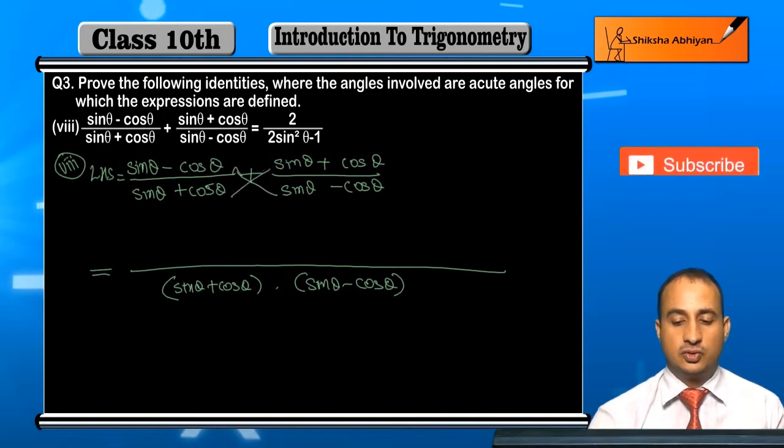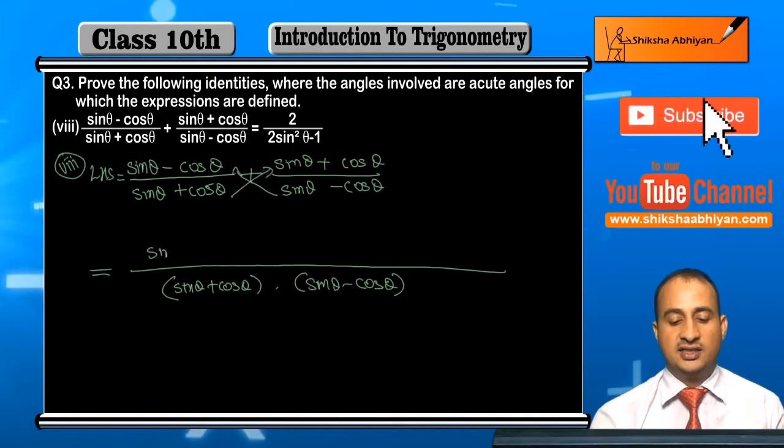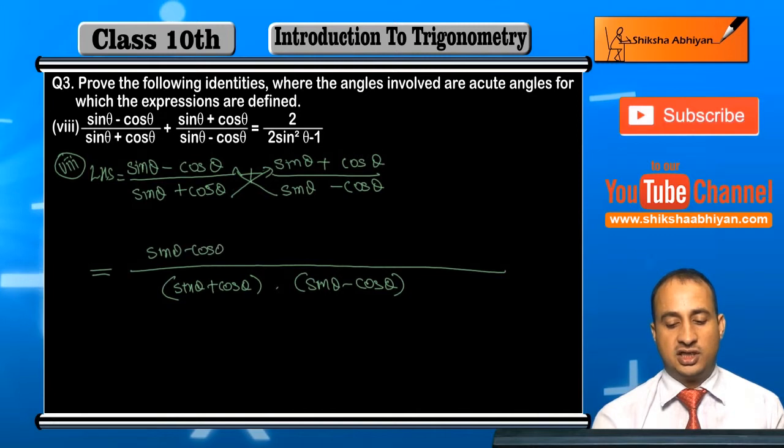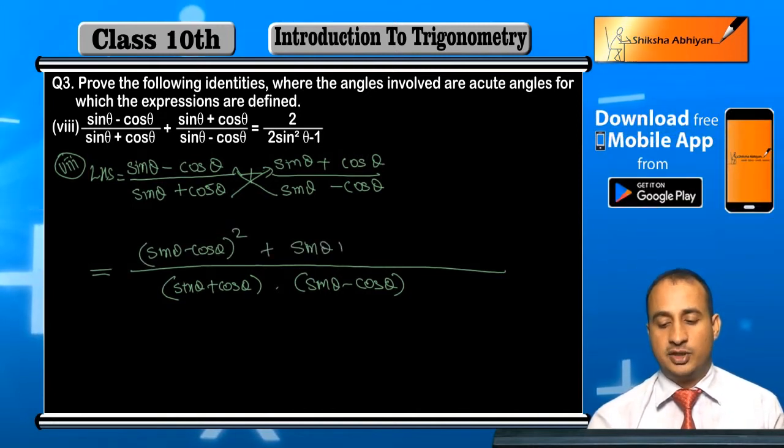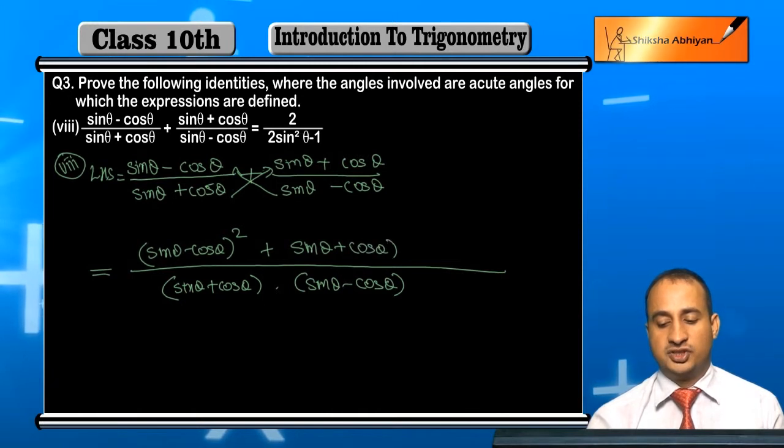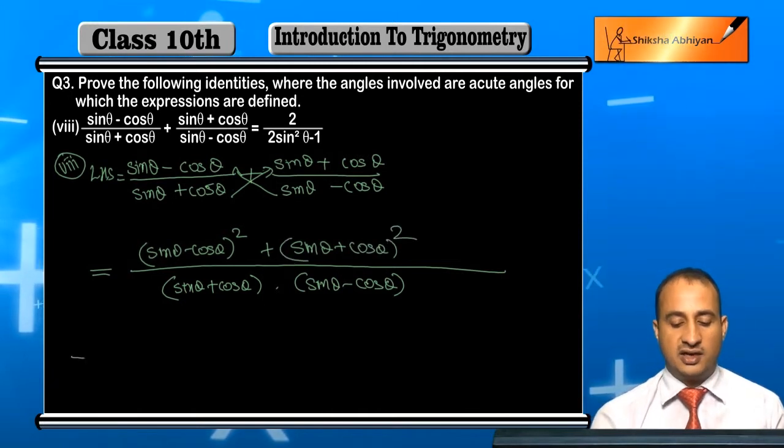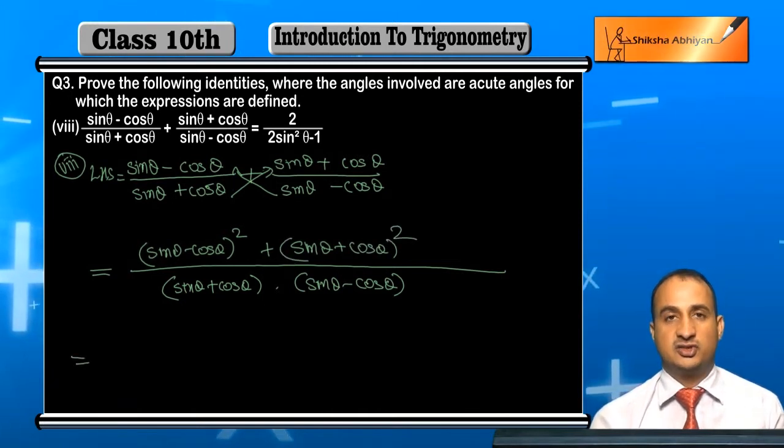And on the upper side, cross multiply. So what will come? Sine theta minus cos theta whole square plus sine theta plus cos theta whole square.